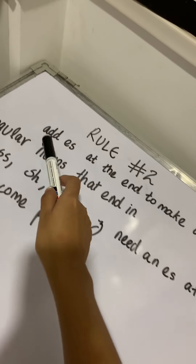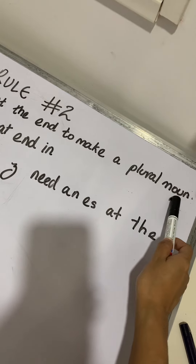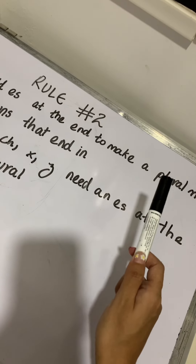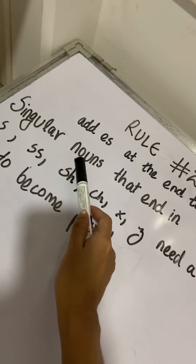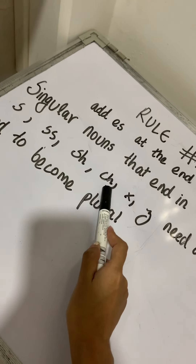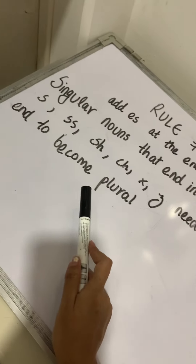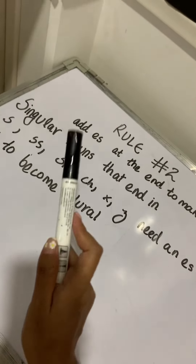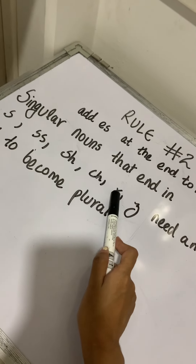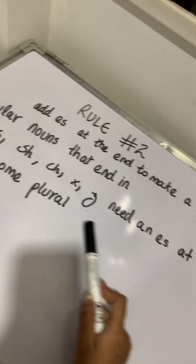Now the second rule: add ES at the end to make a plural noun. Singular nouns that end in S, SS, SH, CH, X, and Z need an ES at the end to become plural. So if the noun ends in S, SS, SH, CH, X, and Z, you will have to add ES at the end to make it plural.